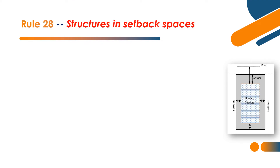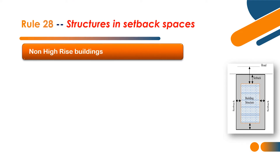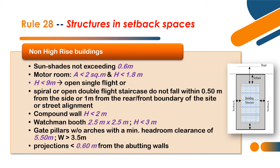Rule 28 deals with Structures in Setback Spaces. Setback was defined in Part 1 and Part 7. The criteria for structures in setback spaces include: Sun Shades not exceeding 0.6m in the setback space; Motor Room with area less than 2 square meters and height less than 1.8m maximum.